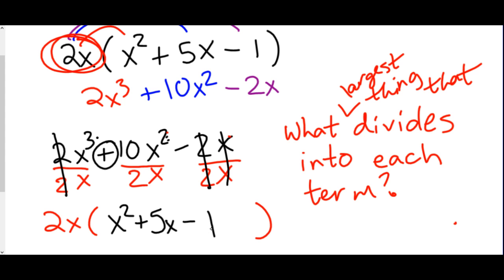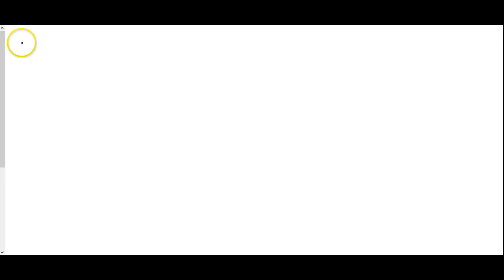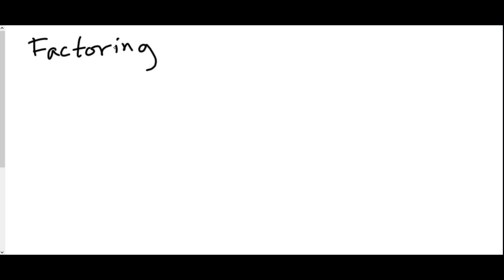On every single factoring problem, even if you can maybe factor further, you need to always check for a greatest common factor. After greatest common factor, the next basic form of factoring is based off of FOILing. When they say the word factoring, there are a lot of different things it could mean. Starting with the first kind, it's based off of FOILing stuff out.